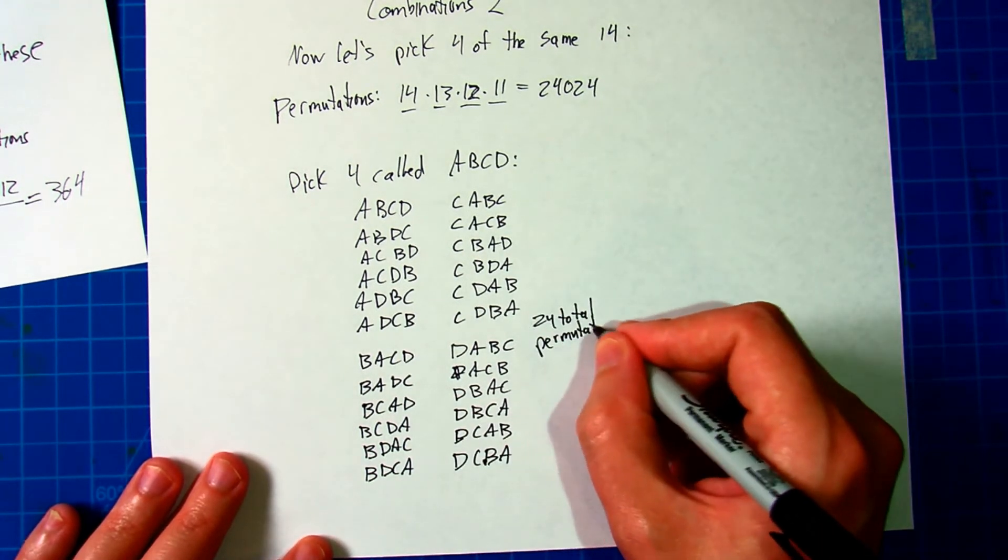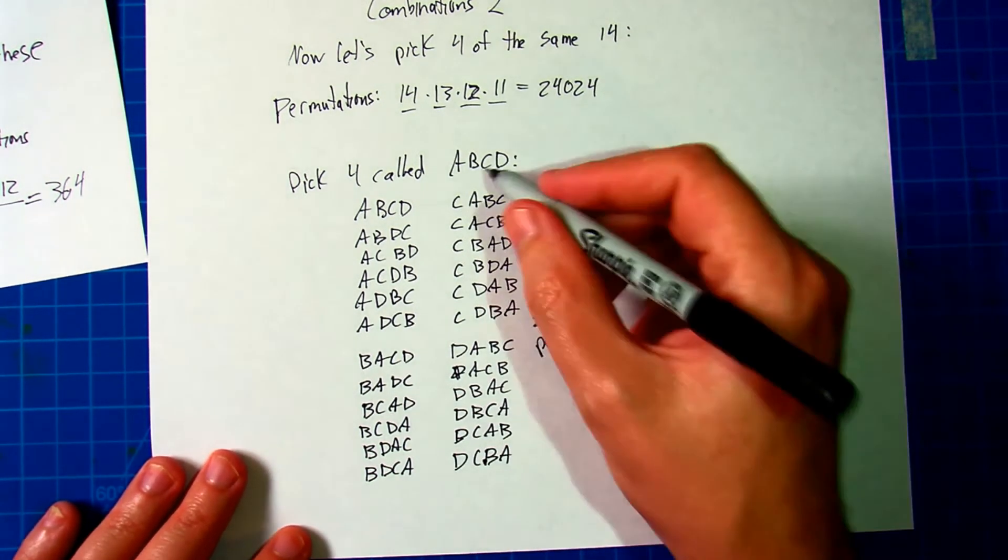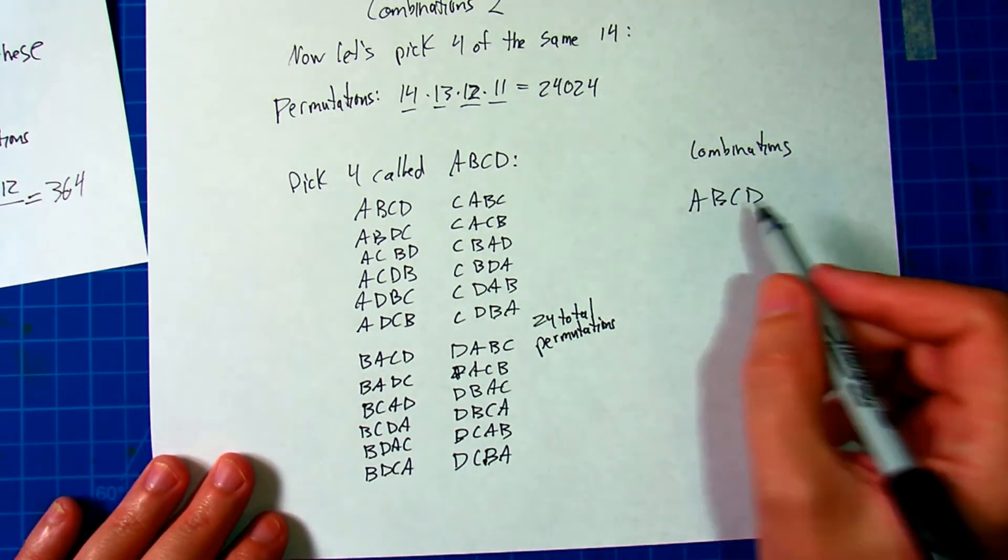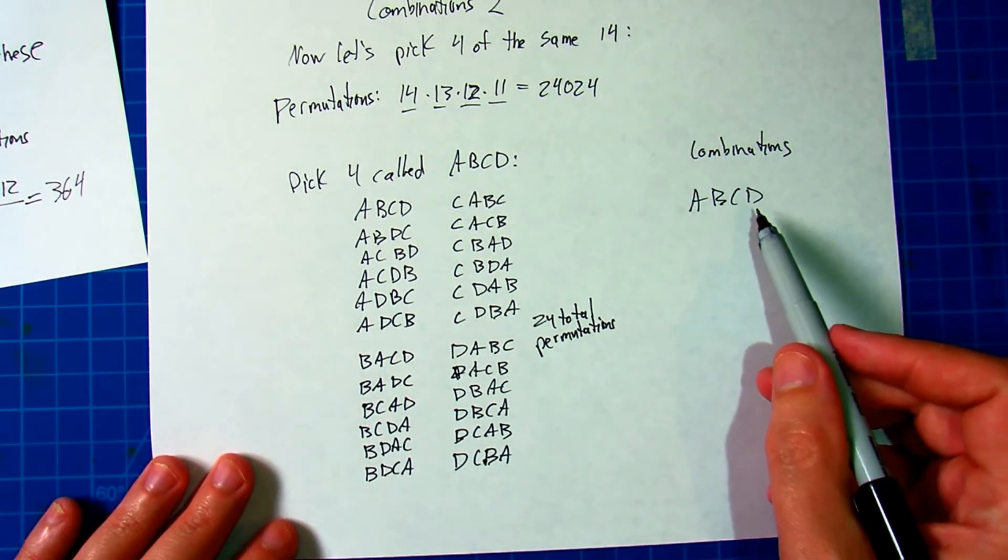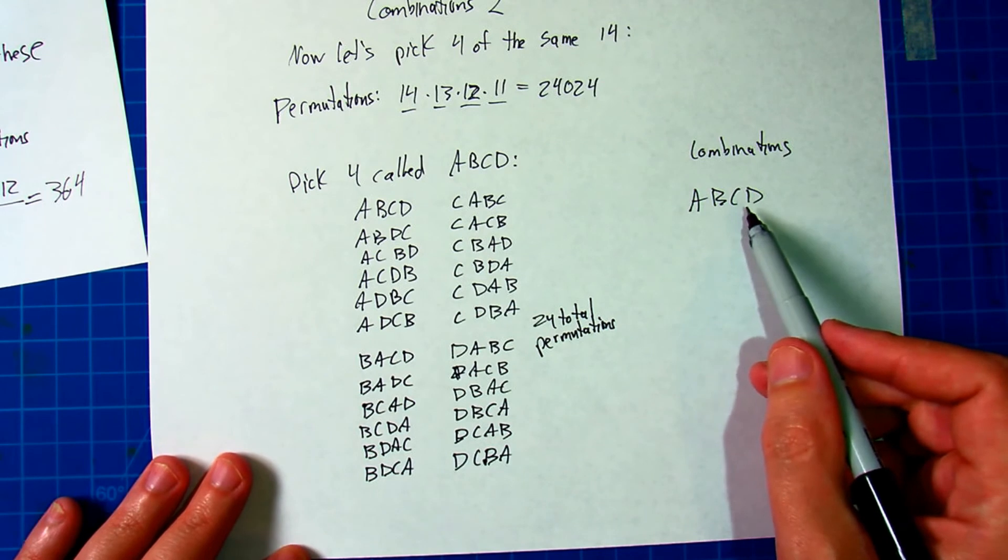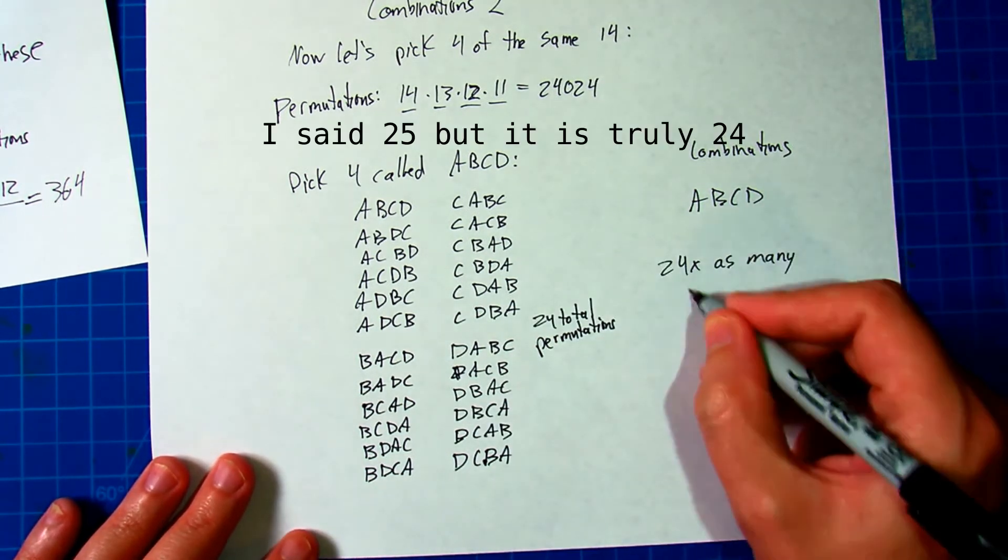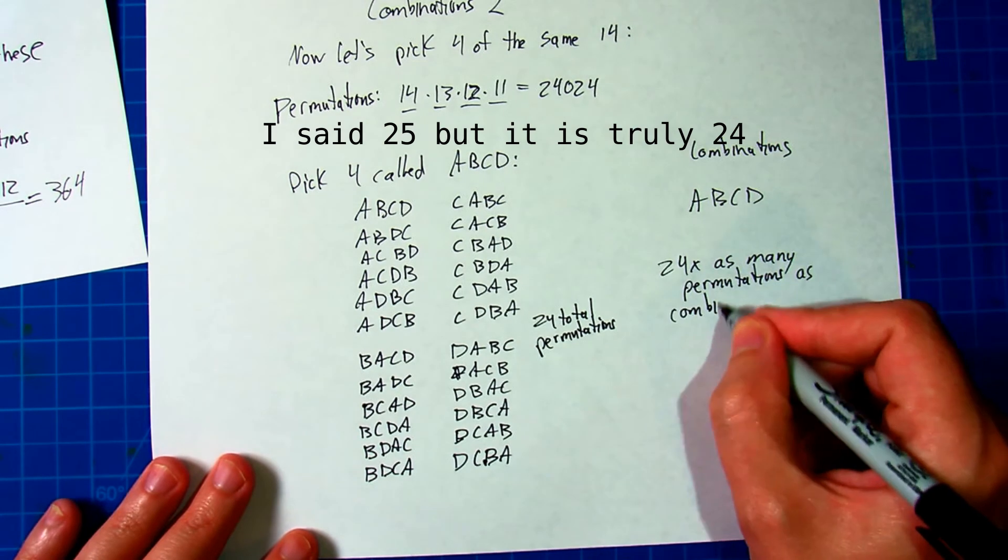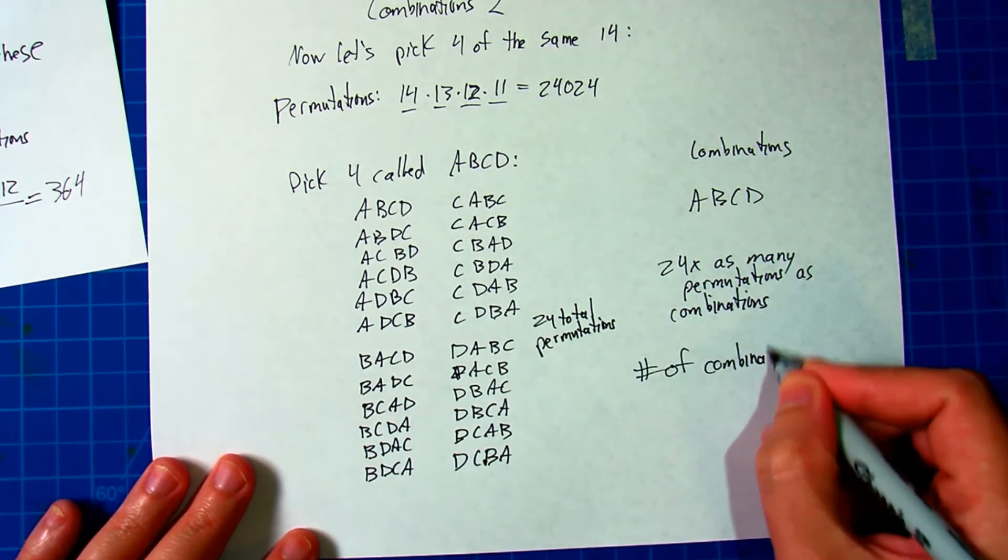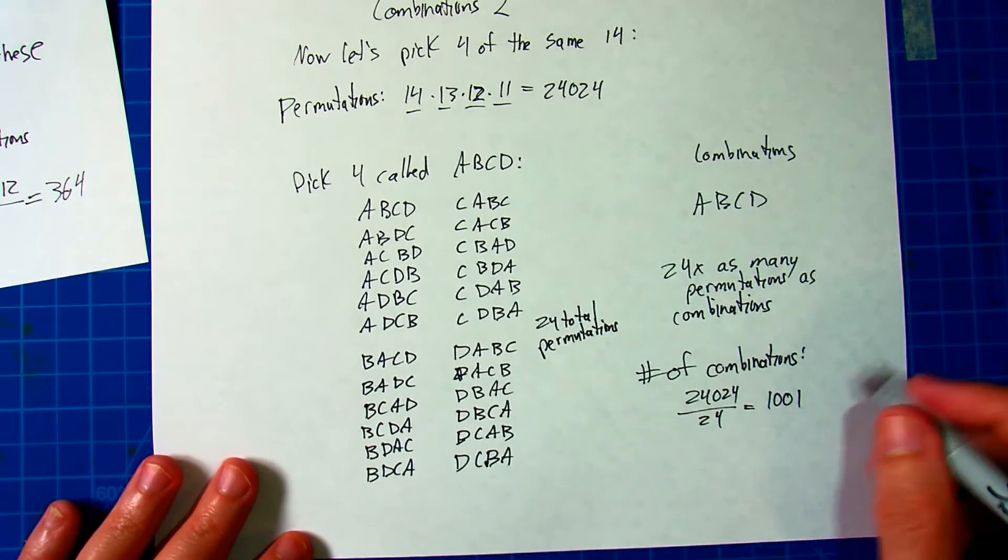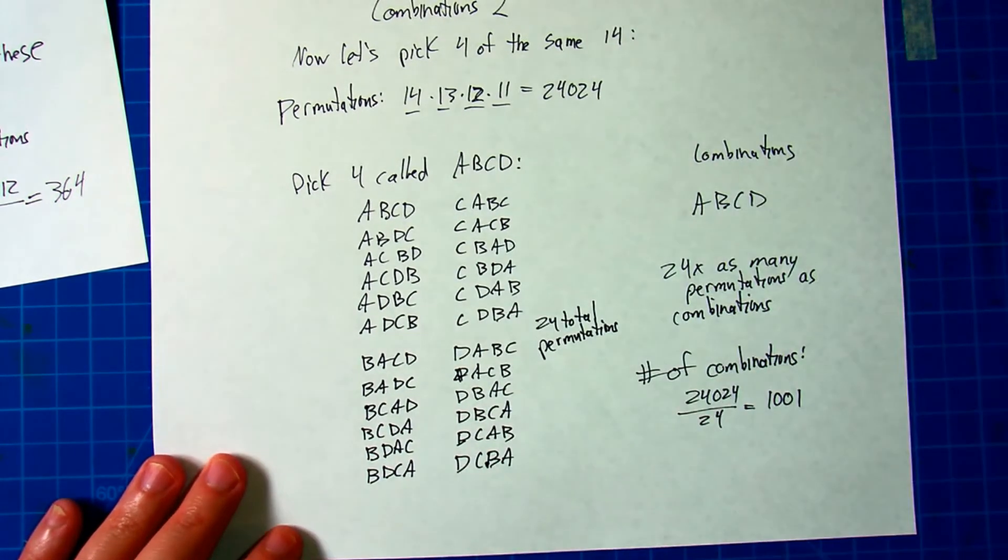In total you'll find there's 24 total permutations of getting A, B, C, D, whereas the combinations are all the same. So again, any four watercolor pencils I pick, for every one of those that's a combination, there's going to be 24 total permutations. So there's 24 times as many permutations as combinations. So I take the number of permutations, I divide that by 24, then I get 1001 total combinations of picking 4 out of 14 watercolor pencils.